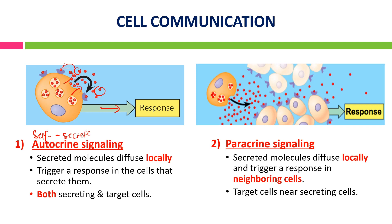The second type is paracrine signaling — 'para' is a prefix meaning 'close to.' Here, the secreted molecule diffuses locally and triggers a response in a neighboring cell. As you can see, there are two types of cells, A and B, with different types of receptors on their membranes. The signaling molecule can bind to cell B, so only cell B provides the response. Only those cells that have the receptor are able to execute and provide the response. The target cell is near the secreting cell.